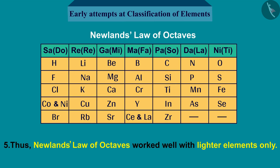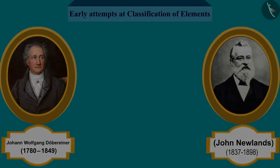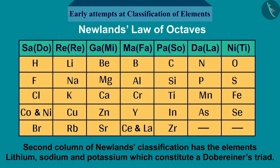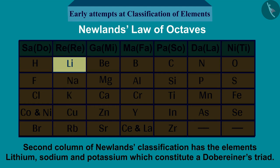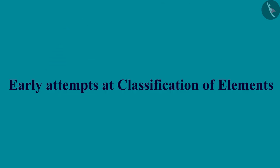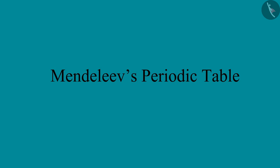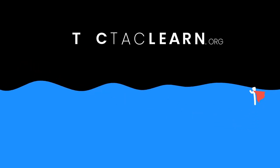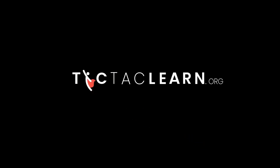Fifth, Newlands' Law of Octaves worked well with lighter elements only. Before we end this discussion, we can observe that Döbereiner's triads also exist in columns of Newlands' Law of Octaves. For example, the second column of Newlands' classification has the elements lithium, sodium, and potassium, which constitute a Döbereiner's triad. In the next video, we will learn about Mendeleev's periodic table.